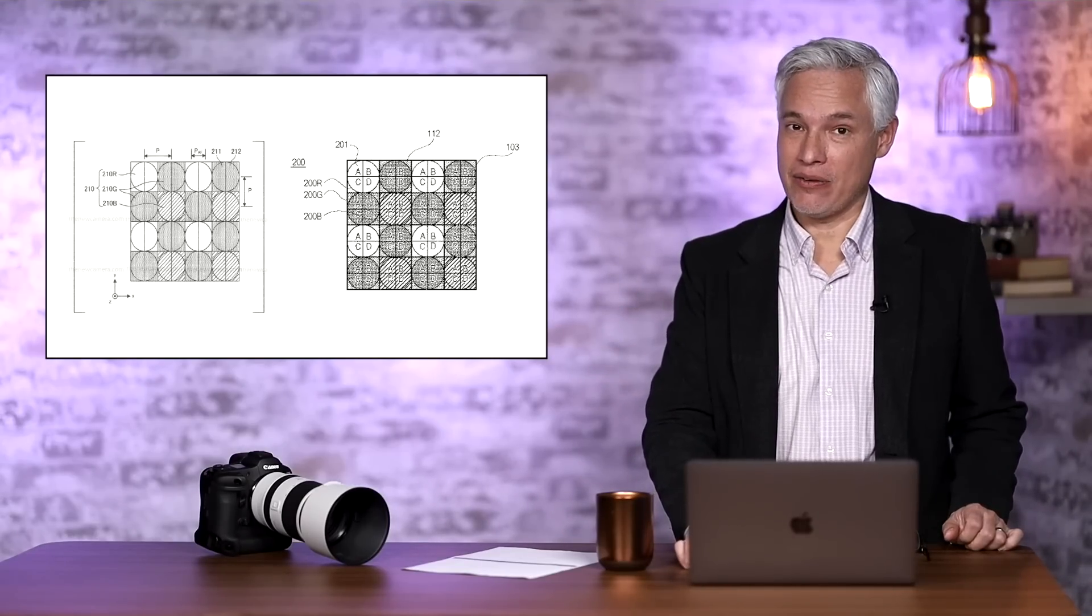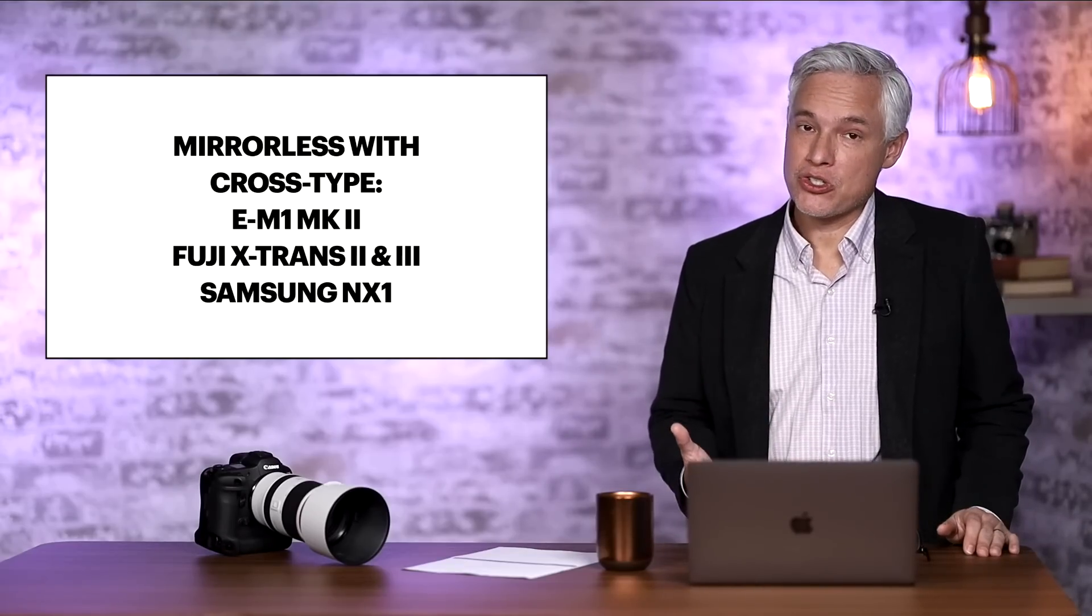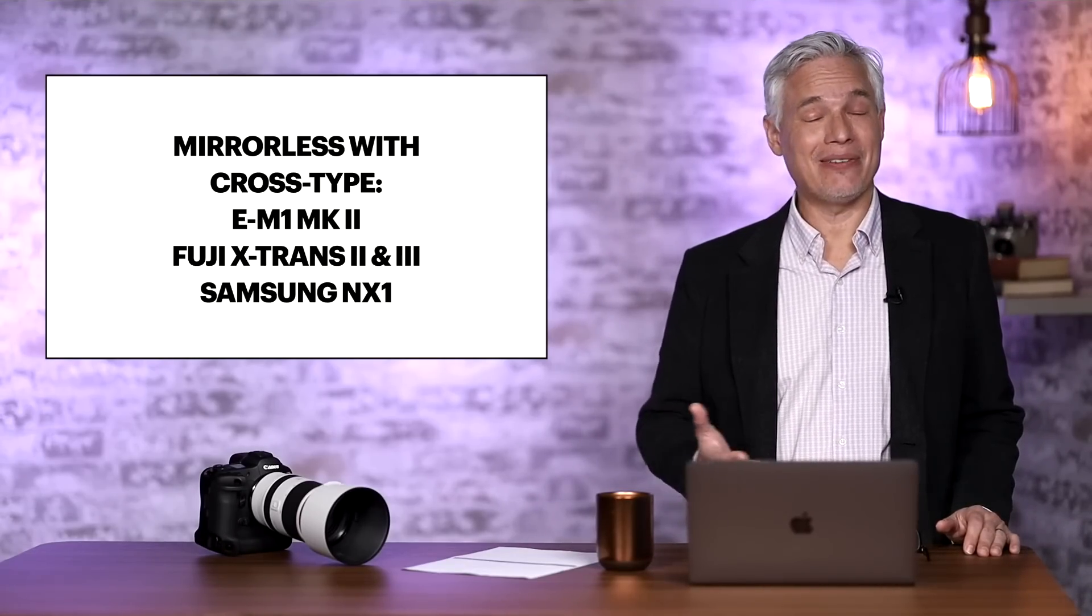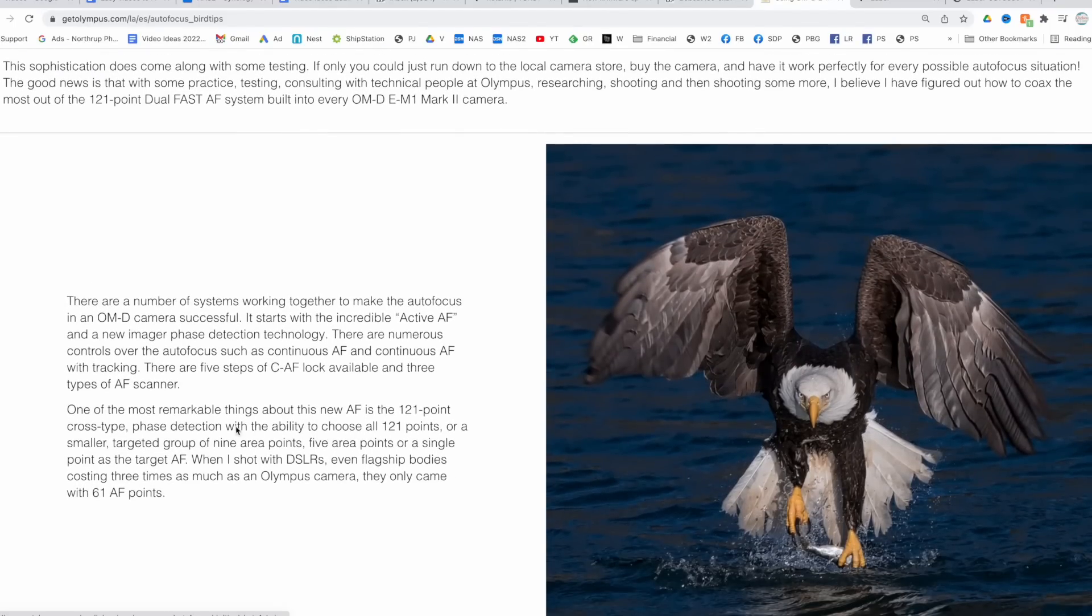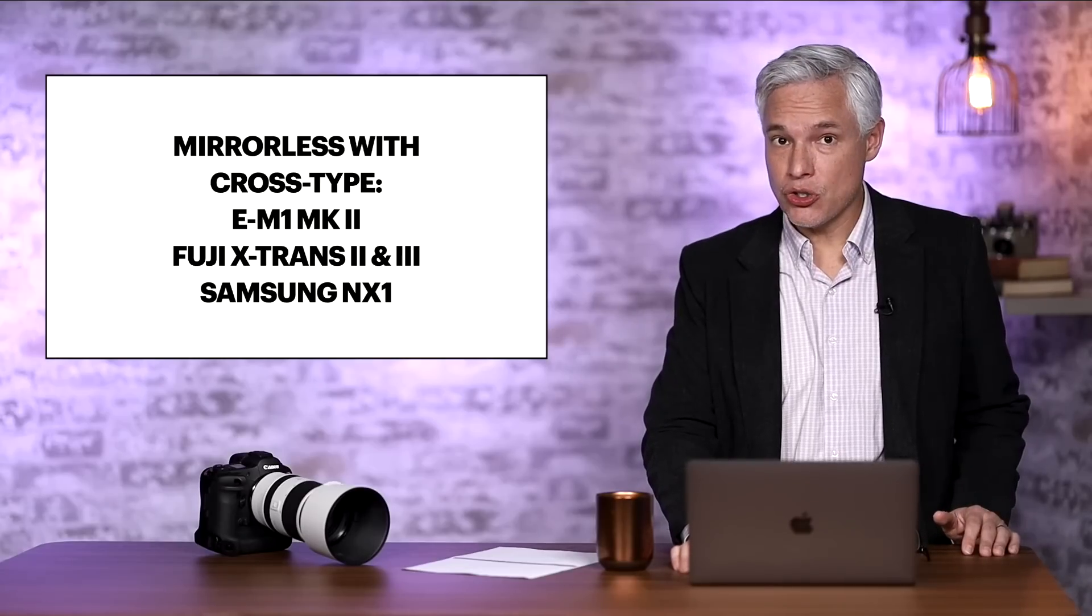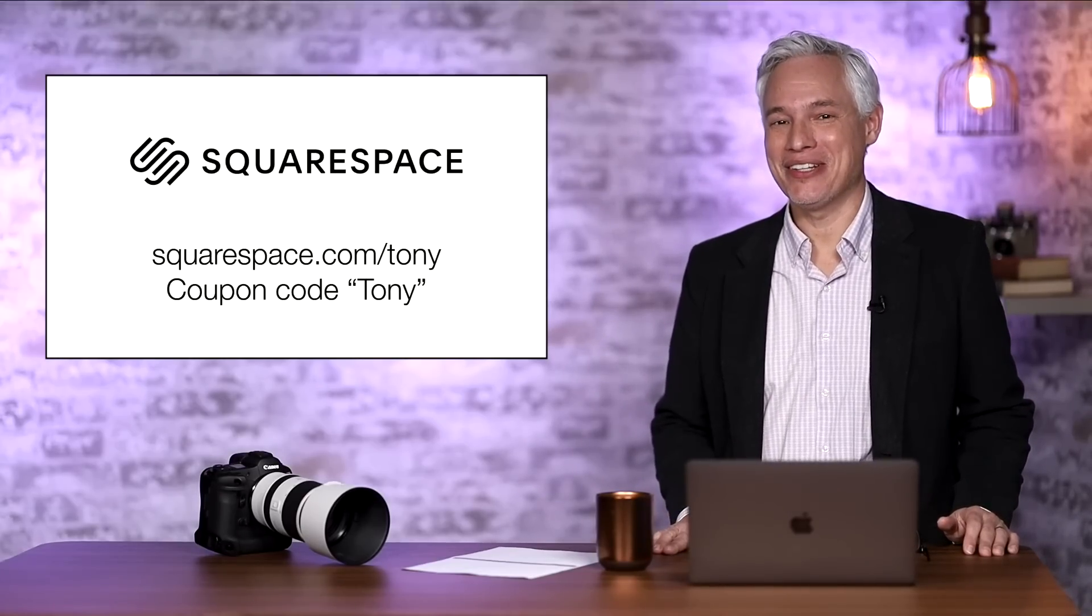This is not the first occurrence of cross-type autofocus points in mirrorless cameras. Several of them have had it in the past, like the Olympus E-M1 Mark II. The Fuji X-Trans 2 and 3 sensors seem to have it. The Samsung NX1 had it. And soon, hopefully, the Canon mirrorless cameras will have it.